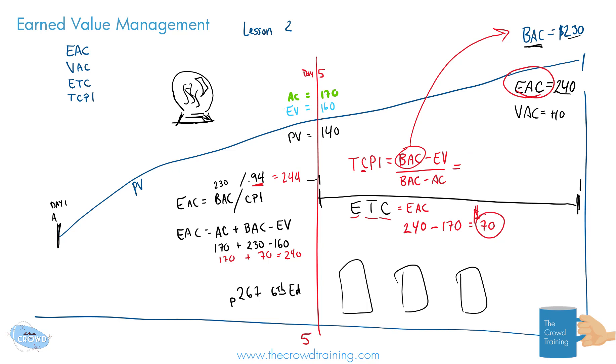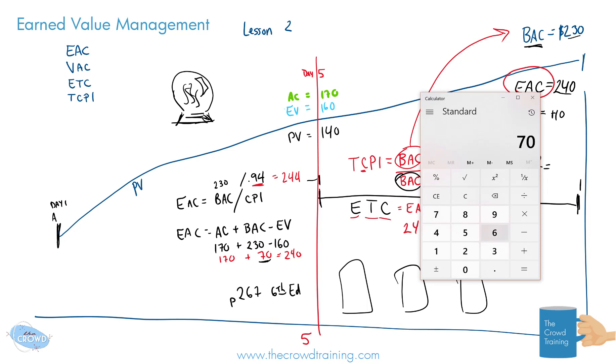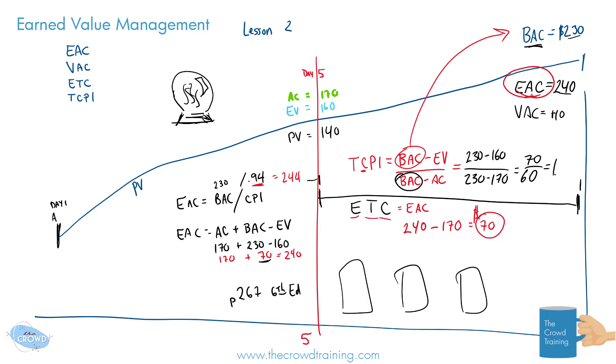Actually, I'll use a black pen so it doesn't mix with our equations. So 230 minus what we've earned up to this point, which is 160. And then, again, we're using the budget at completion, 230, and subtracting the 170. So that gives us the two numbers of 70 like we had here and 60 here. So now, doing the equation, I'll bring up my calculator again. We have 70 divided by 60 equals 1.16. Let's just say 1.166.